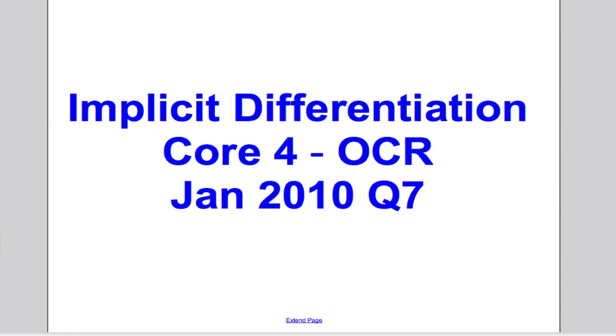Hi there! In the following video, I'm going to answer for you the January 2010 question 7 in the Core 4 OCR A-level paper. The question again is on implicit differentiation. Here we go.